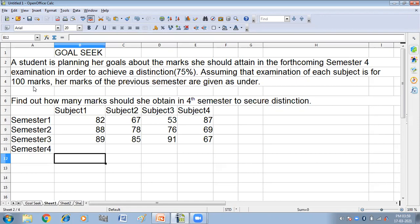So, the student wants to get 75% in each subject. We have subject marks for semester 1, 2, and 3, but we don't know the marks for semester 4.